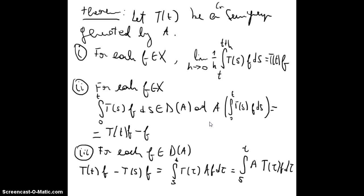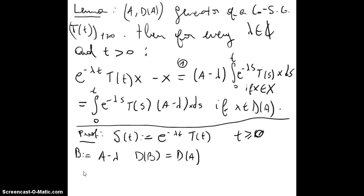For the first equality we will recall a theorem which appears here, but you have to consider e^(-λt) T(t) as a whole semigroup. So we will use the following theorem. We will have e^(-λt) T(t) inside of the integral and instead of A we will have A minus λ, and so we will have the first part of the lemma.